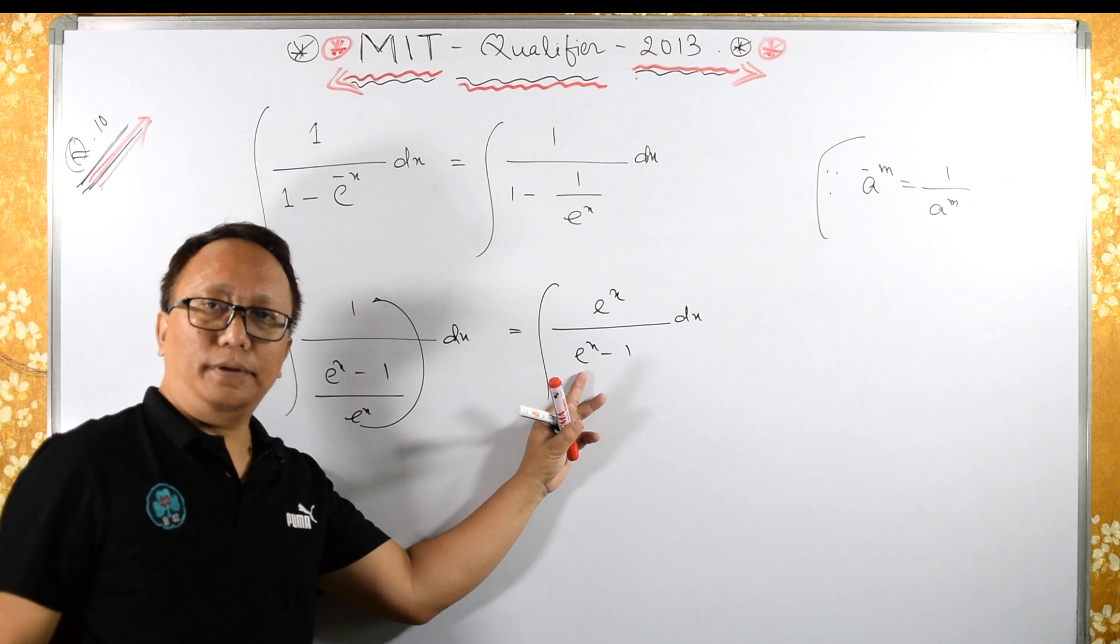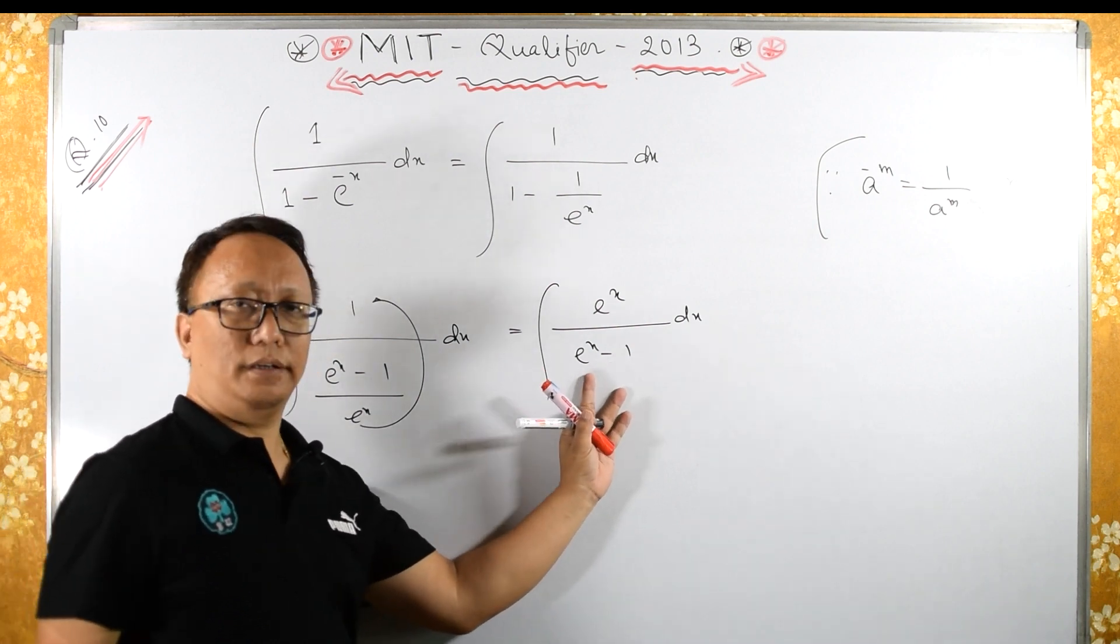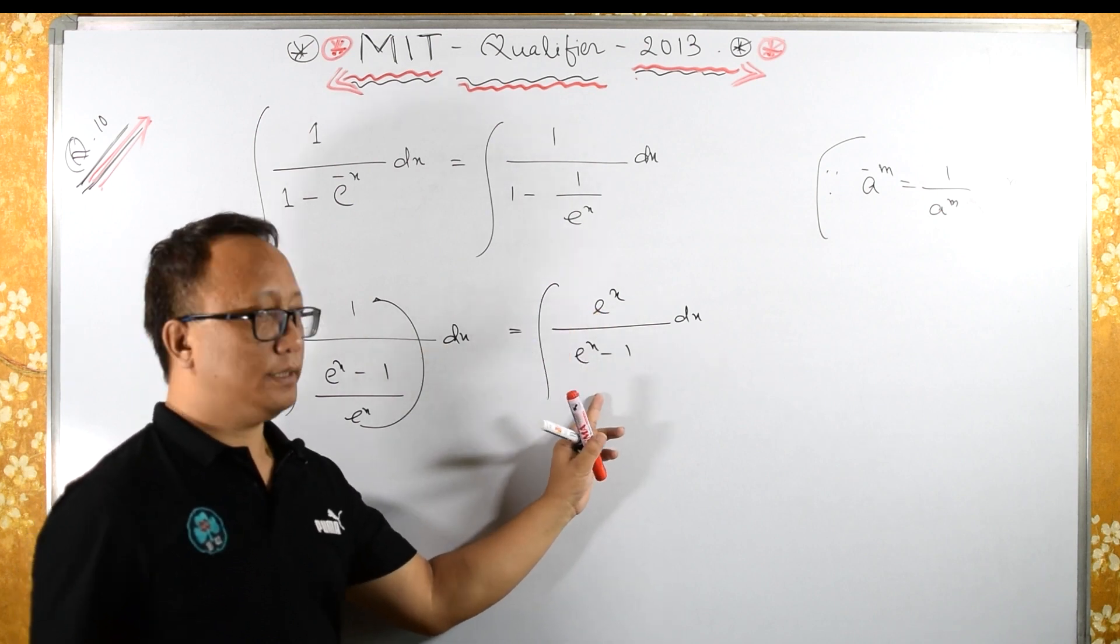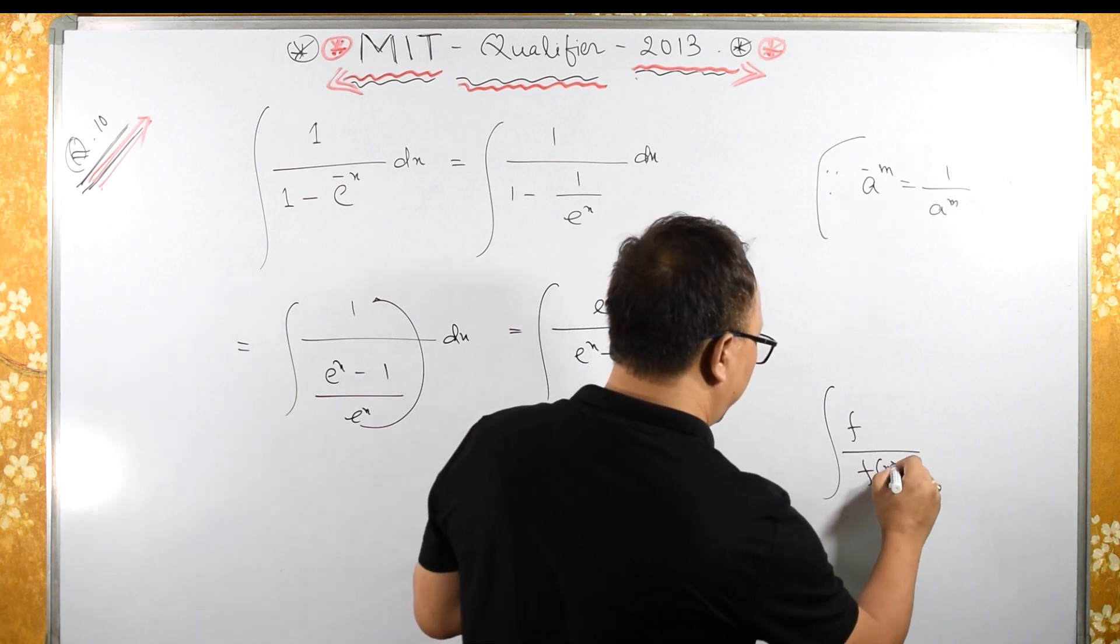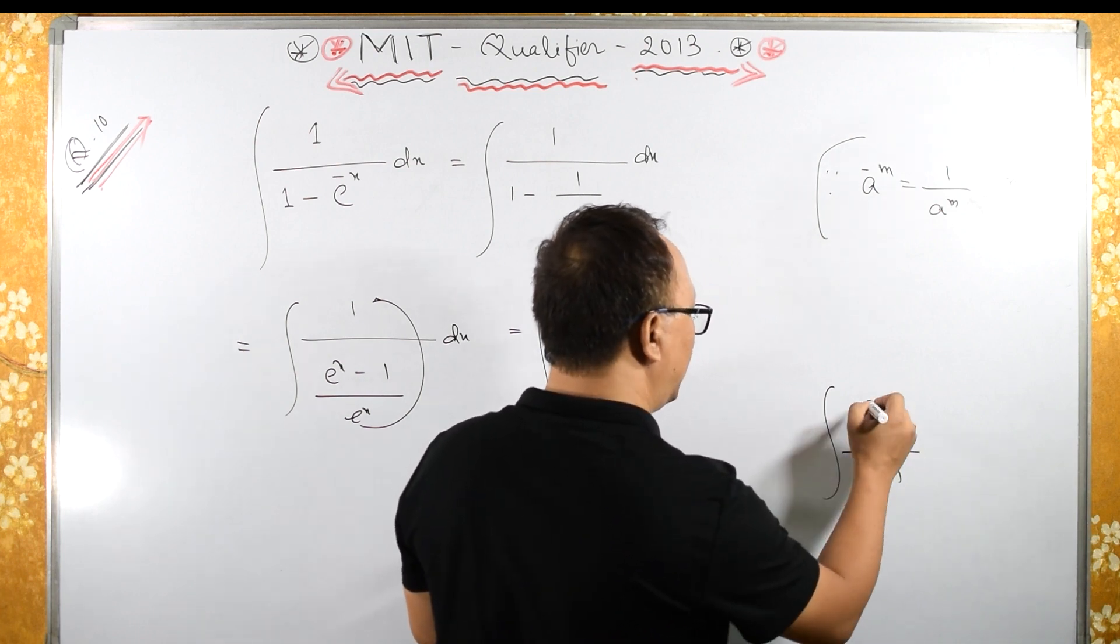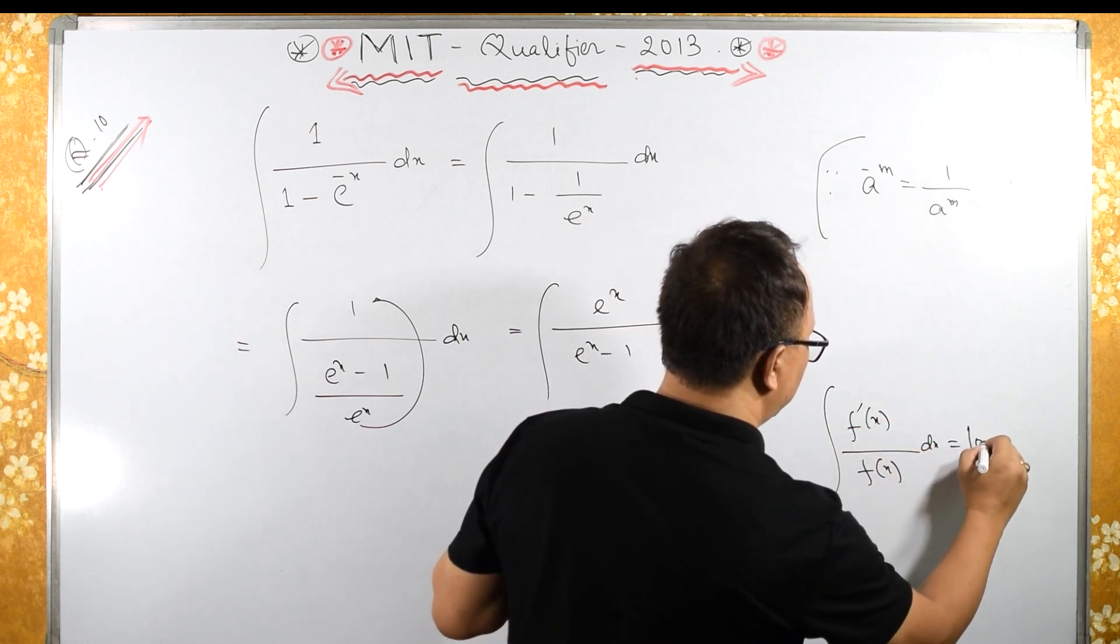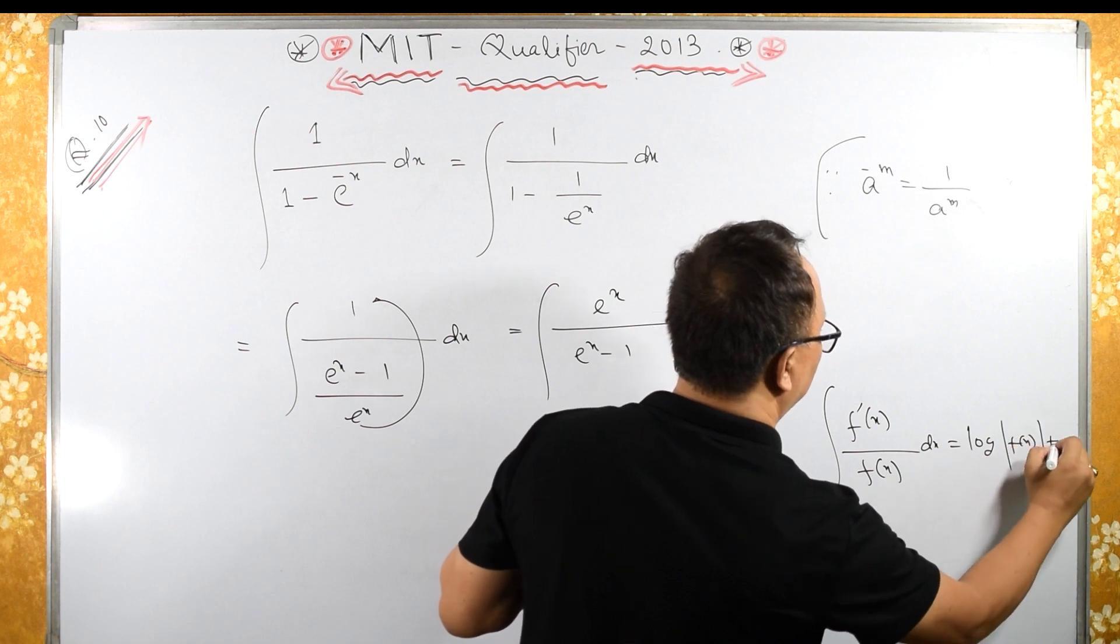Look here in the denominator, what we have: e raised to x minus 1. If you are differentiating the denominator and getting the numerator, then that is log of the denominator. Meaning, integral of f prime of x over f of x dx becomes log of f of x plus c.